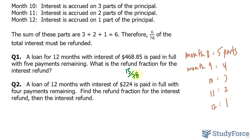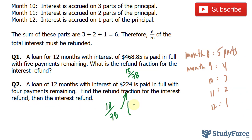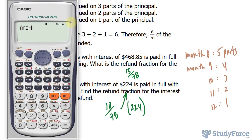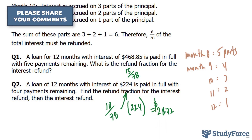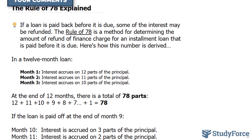Let me explain that further with question 2. A loan of 12 months with interest of $224 is paid in full with 4 payments remaining. So 4 plus 3 plus 2 plus 1 is 10 — that's 10 over 78, which represents the fraction. They're asking for the interest refund, so we take this fraction and multiply it by $224. So 10 over 78 times 224 gives us $28.72 — that would be the interest refund. Now you know what the Rule of 78 is and how it's derived.